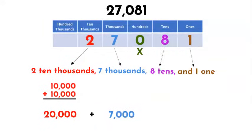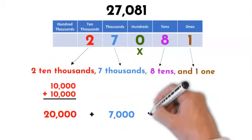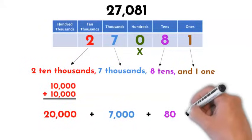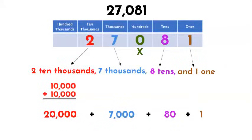Again, we can skip the 0 in the hundreds place. We can add 80, because this is the same as 8 tens. And finally, our 1 one will simply show as 1. Great job! We have decomposed 27,081.